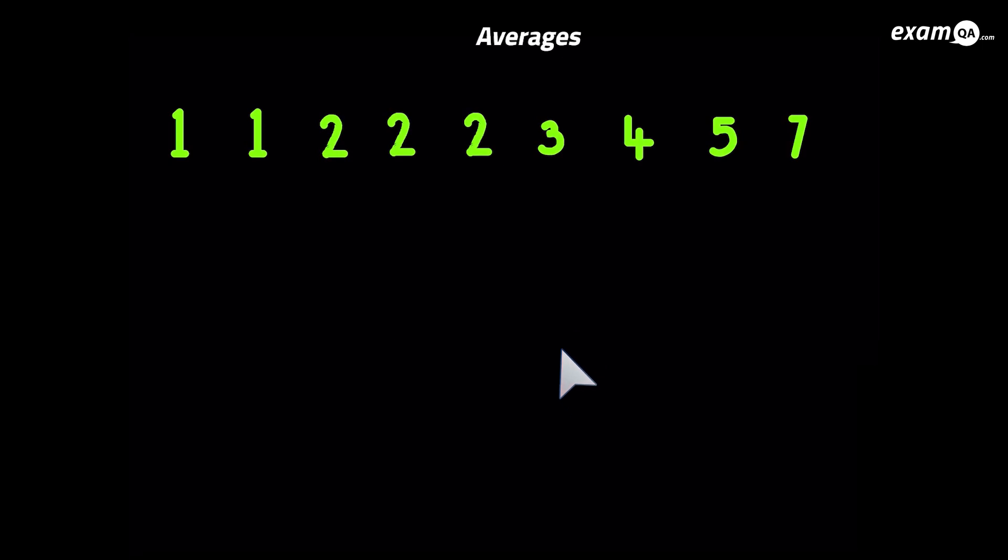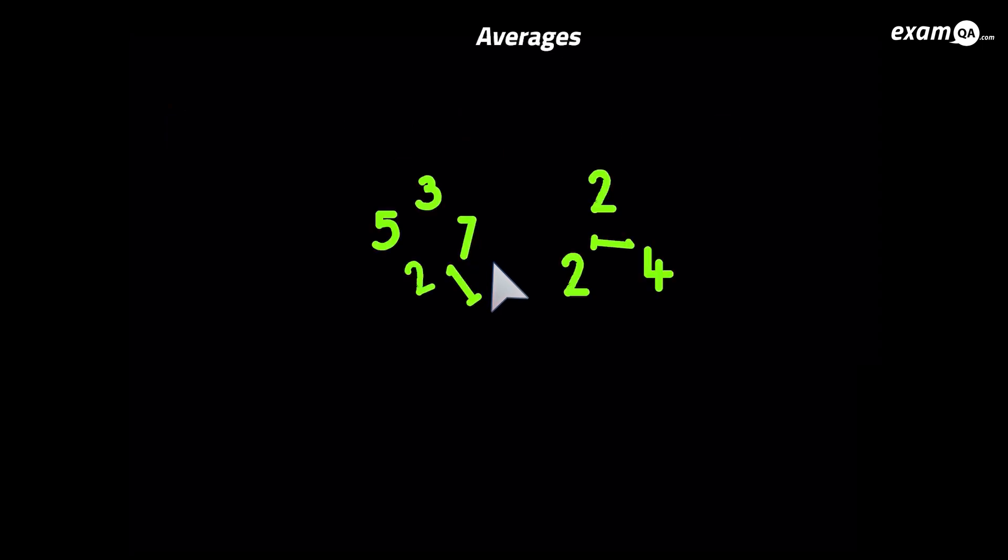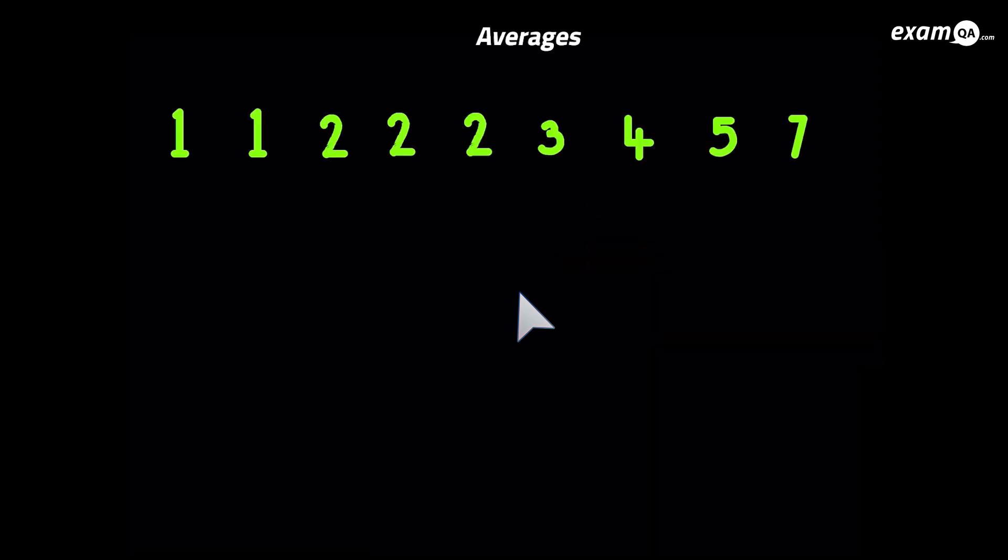Now let's look at the median. Now for the median, you must, must, must put them in order. So we've already done that. So that's okay. However, with the mode, even in that jumbled up order, the QA we had at the start, you could probably work out the mode. But the median, you'll have no chance. So let's go ahead and work out the median.